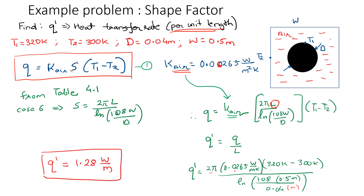A few key things to note: first, read the problem properly and identify whether you are required to use a shape factor — the problem will hint at this or mention it explicitly. Second, choose the shape factor appropriately from the table by following all the constraints and restrictions listed, and read the cases in Table 4.1 carefully.